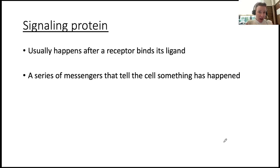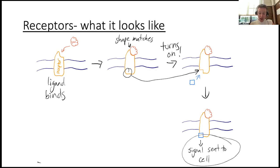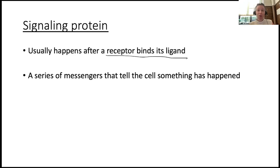The next type of protein we'll talk about is a signaling protein. Now, we kind of already saw this in the last slide, but I didn't really tell you what's happening. Usually a signaling protein works with a receptor protein. You might have been asking yourself in the previous slide down here, how is a signal sent to the cell from the receptor? Well, in comes a signaling protein. And so signaling proteins think of it as a series of messengers that talk to each other to tell the cell something has happened.